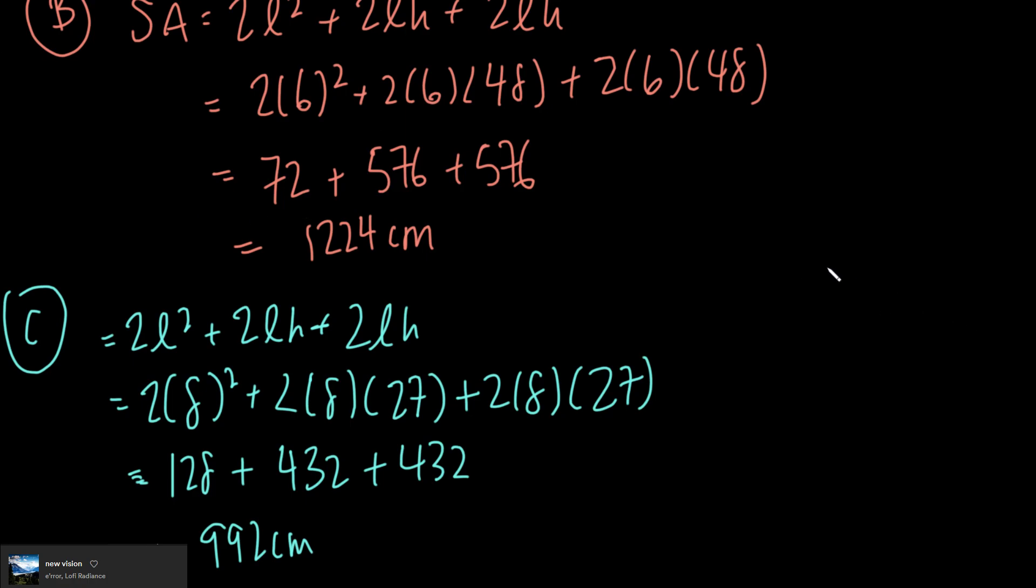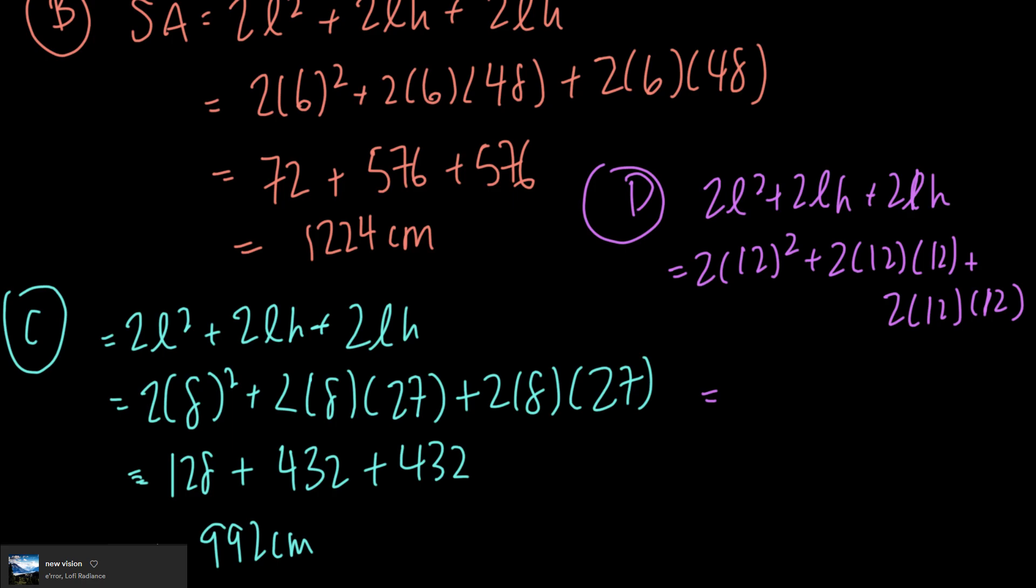For option D, I have 2L² + 2LH + 2LH. In this case, I have a height of 12 and a length of 12, so 2 times 12² plus 2 times 12 times 12 plus 2 times 12 times 12. That's going to equal 2 times 144, which is 288, plus 2 times 12 times 12, which is also 288, and this is 288. So 288 plus 288 plus 288 equals 864, which means option D has my lowest surface area, which means option D is the correct answer.